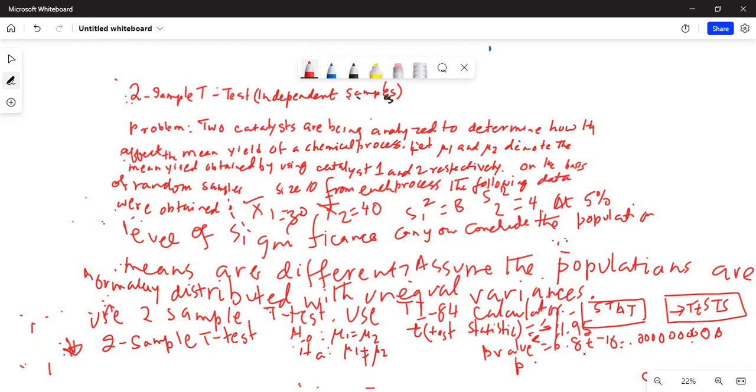Our alpha value is given to us is 0.05, so p is less than alpha. Decision: reject H0.